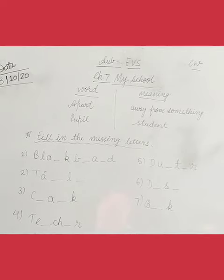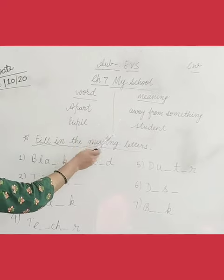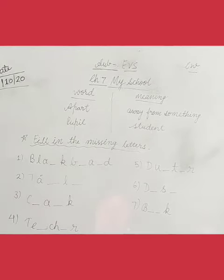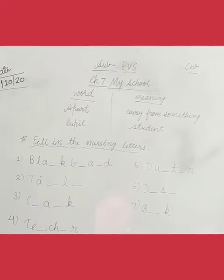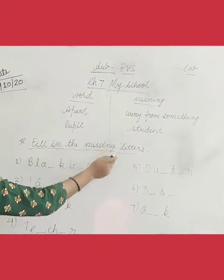Children, first we will do word meanings of the chapter. Apart (A-P-A-R-T) means away from something. Next is pupil (P-U-P-I-L), which means student.